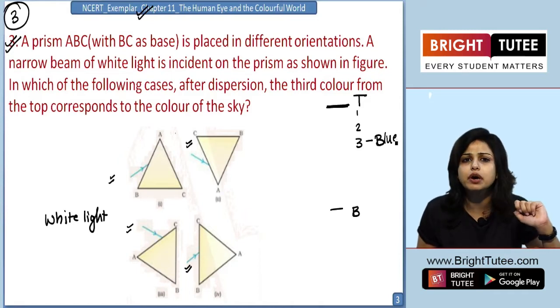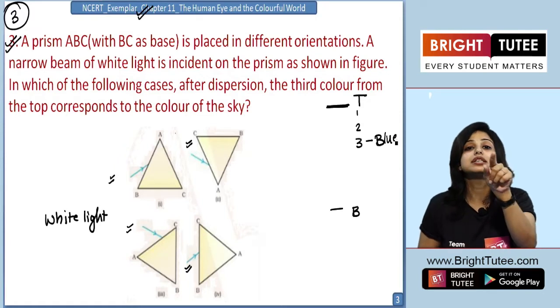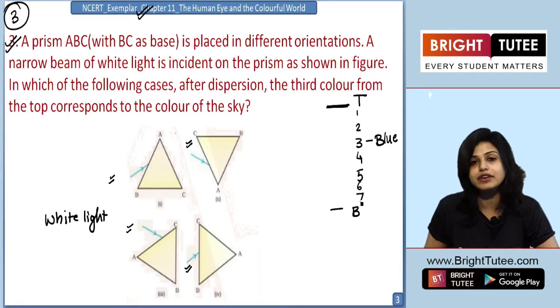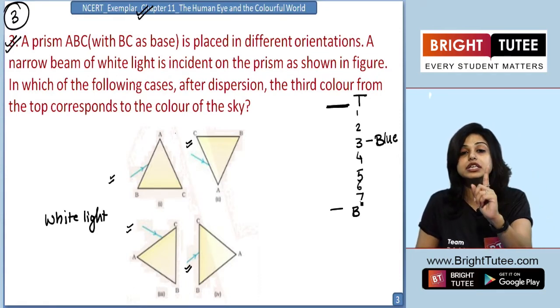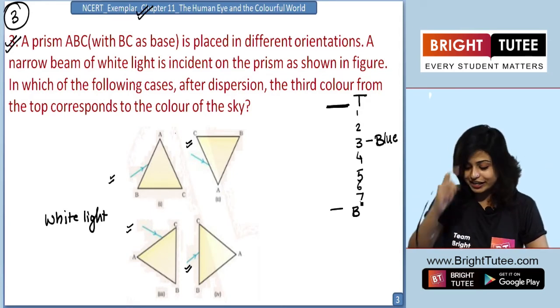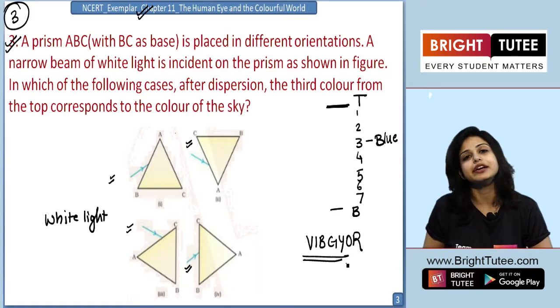And when white light disperses from a prism, how many colors does it form? It forms a 7 color spectrum. So number 1, 2, 3, 4, 5, 6 and 7. There are 7 colors in the spectrum of white light. Do you remember what is the order of that spectrum students? Very correct. The order of the spectrum is given as VIBGYOR. Where V is the first color, that is violet,